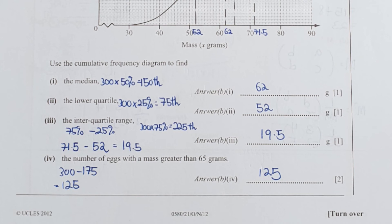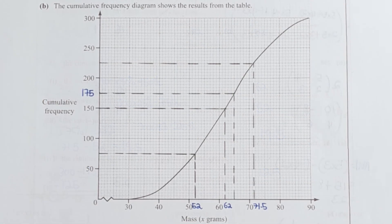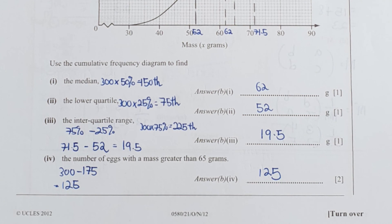For part 4, I drew up from 65 grams. I get the result as 175. They are asking for those who are greater than 65. So I took 300, which is the total, minus 175. I get the result as 125.